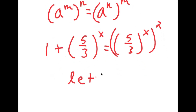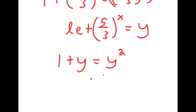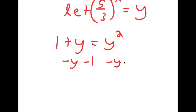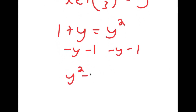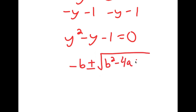Now I'm going to let 5 over 3 to the power of x equal to the variable y. So I get 1 plus y is equal to y squared. And if I subtract y and 1 on both sides, I get y squared minus y minus 1 is equal to 0. So I get a quadratic equation.